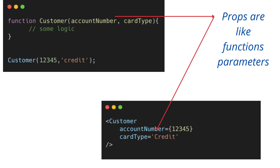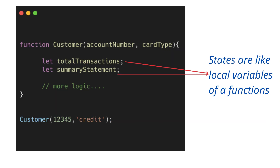Now let's understand where state fits into this structure. In a simple JavaScript function, anything passed from outside is received as a parameter. But every function also has some internal logic and internal variables that are bounded to that function only — you cannot access those outside the function. For example, the customer function may have a total transaction summary and other data local to it. Similarly in React, if you want to handle data that is local to a component, you can handle it with the help of state. States are like the local variables of our functions.